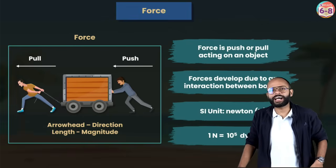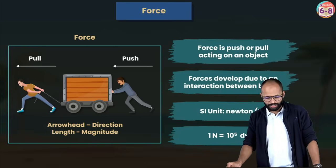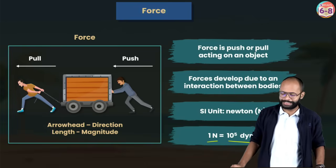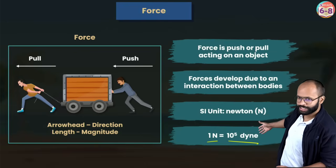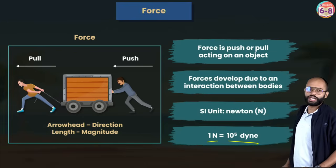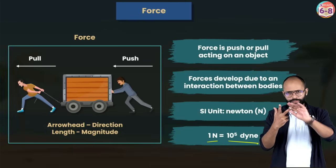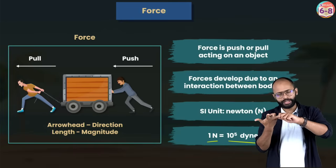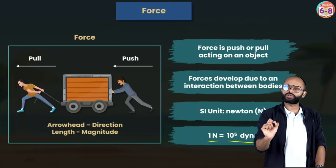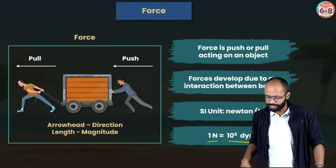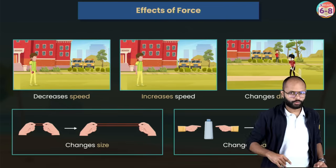The SI unit of force is the newton, in honor of Sir Isaac Newton. One newton equals 10 to the power of 5 dyne — dyne is the CGS unit. Force is also a vector quantity: you need a number with a unit plus a direction to say this much force is acting in this direction, then the information is complete.